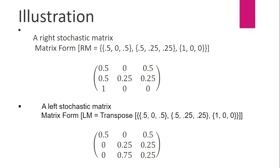These are some illustrations of stochastic matrices. For a right stochastic matrix, the matrix form will be: 0.5, 0, 0.5 in the first row; 0.5, 0.25, 0.25 in the second row; and 1, 0, 0 in the third row. By adding all the values in each row, we get 1.